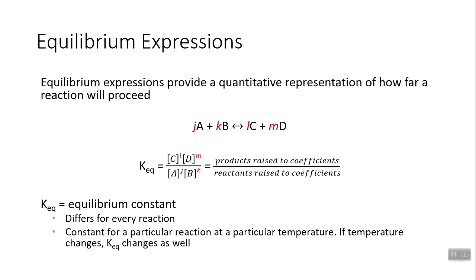When we talk about reversible reactions at equilibrium, we write equilibrium expressions. Equilibrium expressions provide a quantitative representation of how far a reaction will proceed — will it go nearly to completion and favor products, or will the reaction hardly proceed and favor the reactants? To write the equilibrium expression, we'll take a look at a general example.